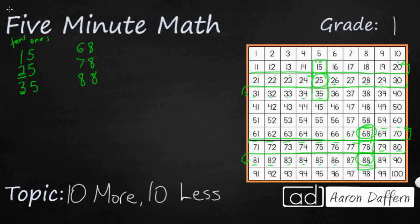So that is the easiest way to do 10 more, 10 less. You can take your number and then just change the tens digit to one more or one less, because this digit right here is worth 10. And that's what we're trying to find is 10 more and 10 less.